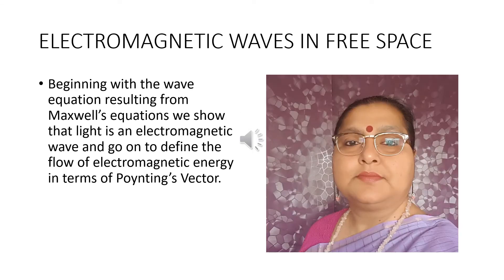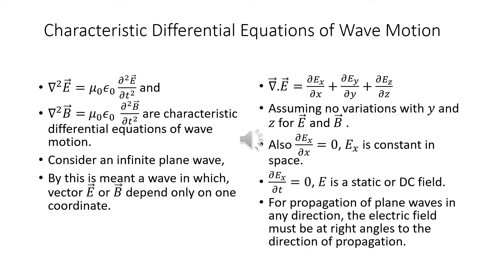Beginning with the wave equation resulting from Maxwell's equations, we show that light is an electromagnetic wave and go on to define the flow of electromagnetic energy in terms of Poynting's vector. We see that ∇²E = μ₀ε₀ ∂²E/∂t² and ∇²B = μ₀ε₀ ∂²B/∂t² are characteristic differential equations of wave motion.